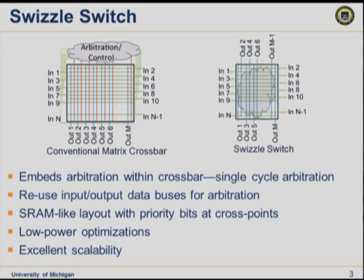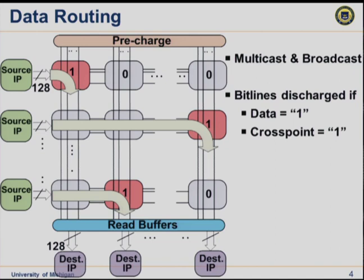I'll break down internally how arbitration and control work within the Swizzle Switch. Looking at data routing: I have source inputs on the left in green and destination outputs at the bottom in gray. There's a path from inputs to outputs wherever a one is stored at a cross point. I dynamically pre-charge the output bit lines and only discharge a particular bit line if the data I'm transmitting says to discharge it and there's a one stored at that local cross point. This configuration also supports broadcasting — setting a one in all bits across one horizontal row — and multicasting, where only a subset of bits are set. The only restriction is that only one input can talk to a particular output at a time.